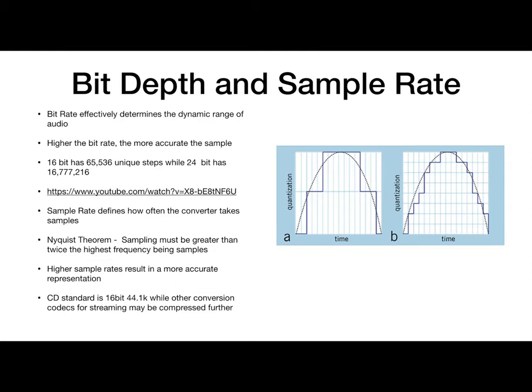The second determining factor in the conversion process is sample rate. Sample rate executes the process of gathering an accurate representation of the sound's frequency spectrum by periodically taking samples. Just like its name, the sample rate is in fact the rate at which these samples are taken. The Nyquist theorem, in short, defines a minimum sample rate for an accurate representation of the frequency spectrum as at least two times the highest frequency being sampled.